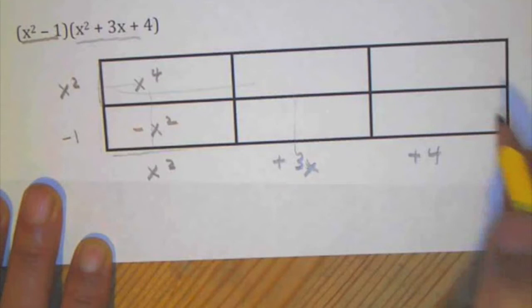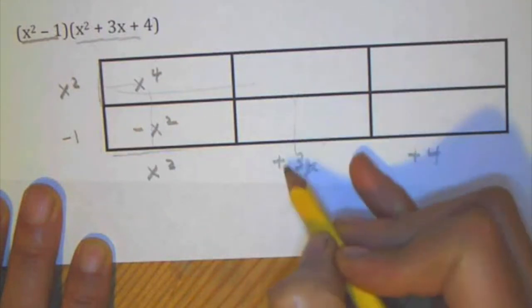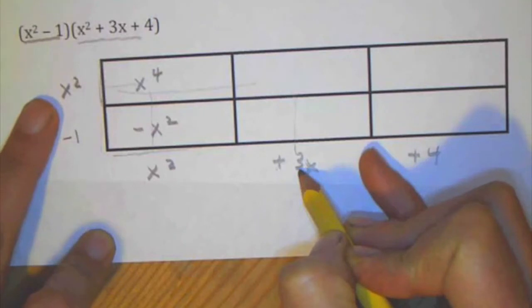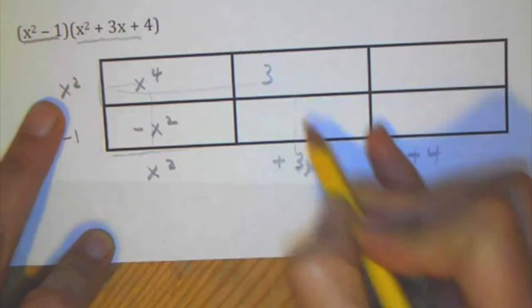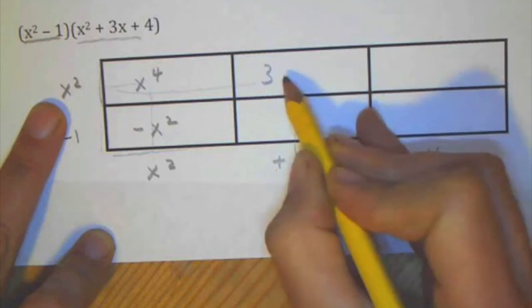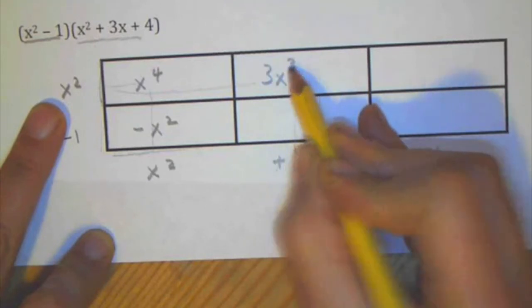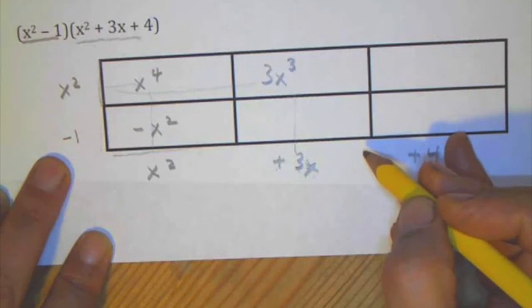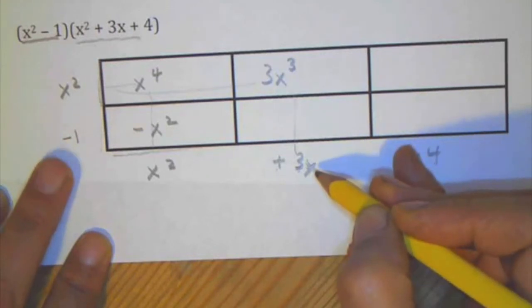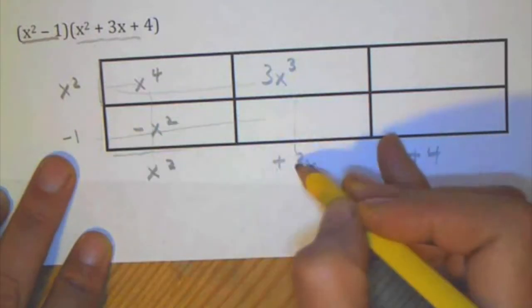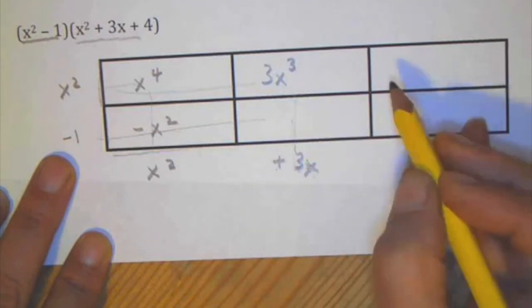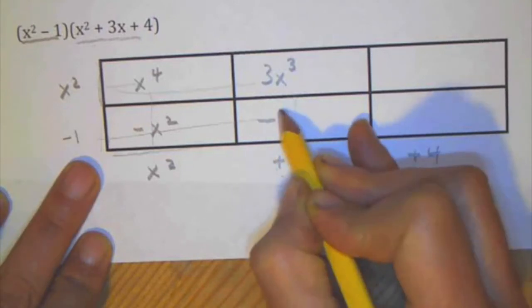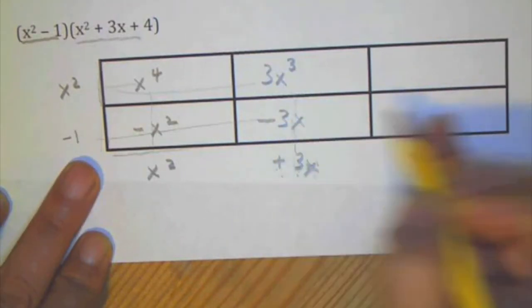Here is x squared times positive 3x. So once again, sign is positive, the number 3 times the coefficient here would be 1, so that's 3. And x squared times x is x to the third power. You can watch a video on exponents if you need a little help with that. And then here, negative 1 times positive 3x. So sign first, negative times a positive is negative, 1 times 3 is 3. Variable, so sign number variable.